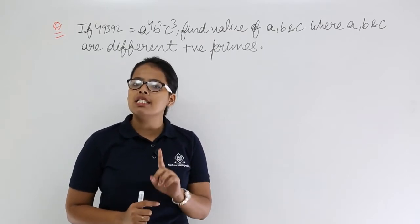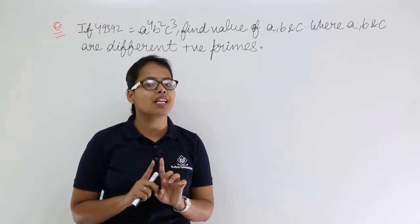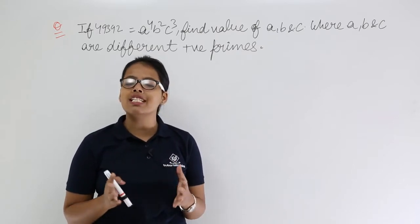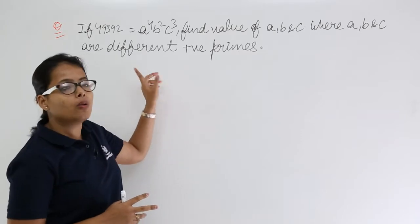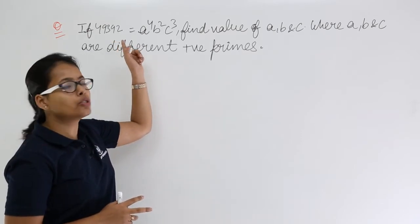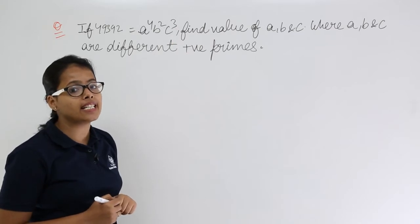Same goes for 3. 3 is divisible by 3 and 1, but not by any other number. So these numbers are the prime numbers. You need to find out the factors for this value so that you can easily find the value for a, b, and c.